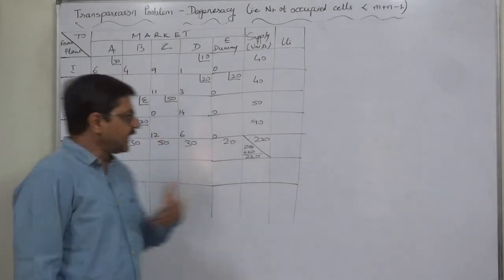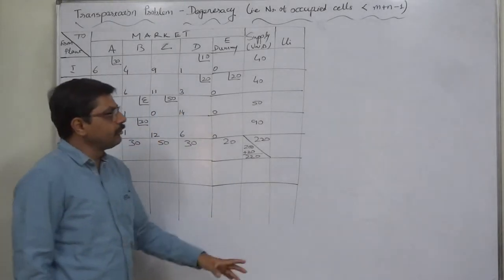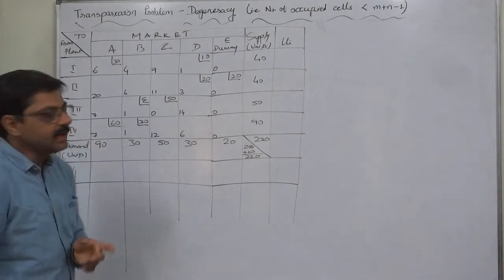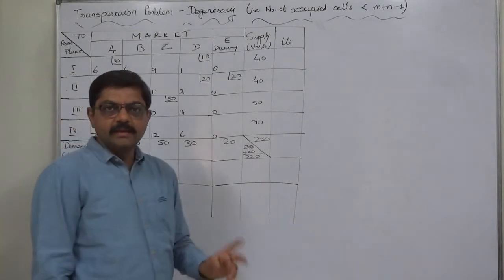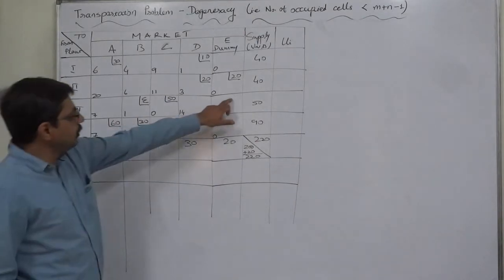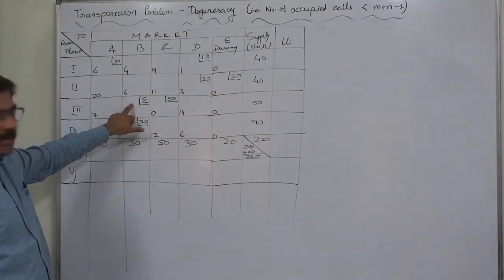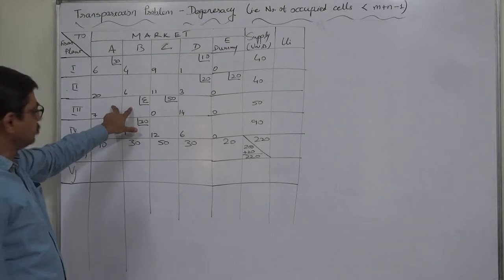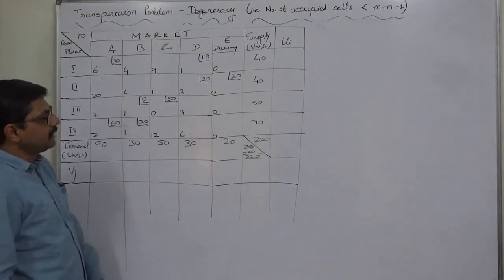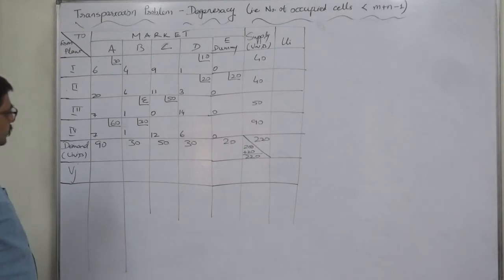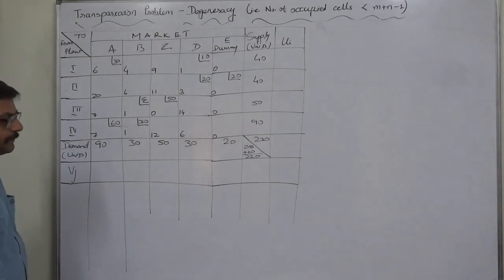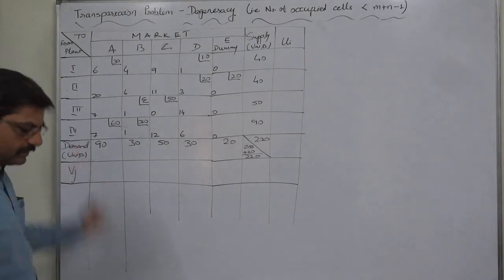In Part 2, we found that by calculating DIJ values the solution was not optimal. We then created a closed loop and ultimately concluded that epsilon is shifted to that cell, because those 2 cells had a negative value in Part 2. Now this is Part 3. This is the revised solution — let's first write the UI and VJ values, then calculate DIJ values and check whether this is an optimal solution or not.